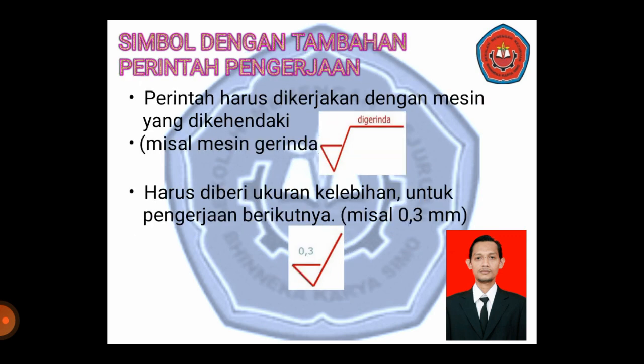Simbol dengan tambahan perintah pengerjaan. Perintah harus dikerjakan dengan mesin — setelah Anda tahu simbol itu, kemudian ditambah misalnya di gerinda, berarti dikerjakan dengan mesin gerinda. Nanti ada juga yang ada tulisan di bor, berarti mesin yang digunakan adalah mesin bor, dan sebagainya. Yang selanjutnya adalah harus diberi ukuran kelebihan untuk pengerjaan berikutnya — misalnya 0,3 berarti di situ ditulis 0,3.